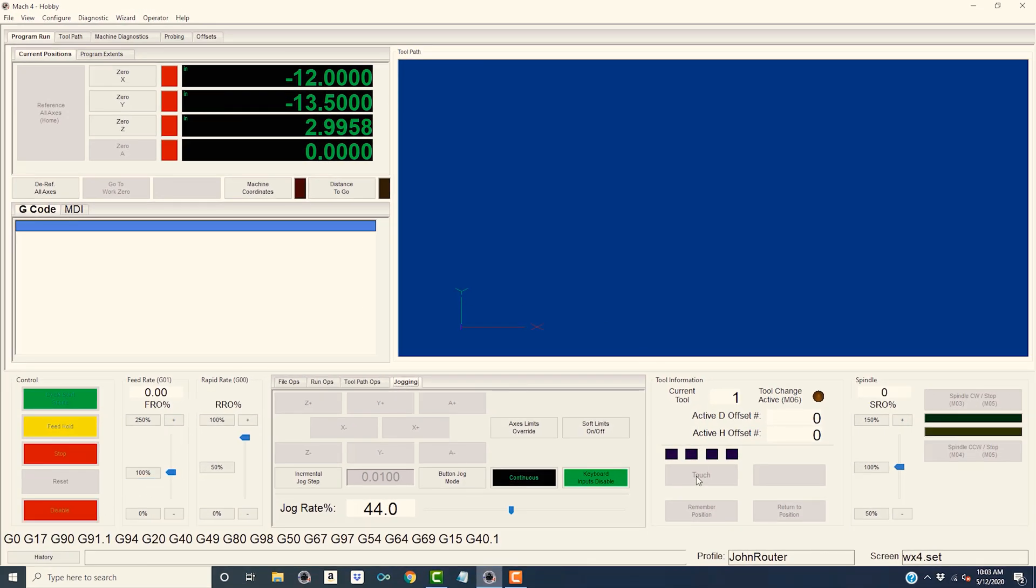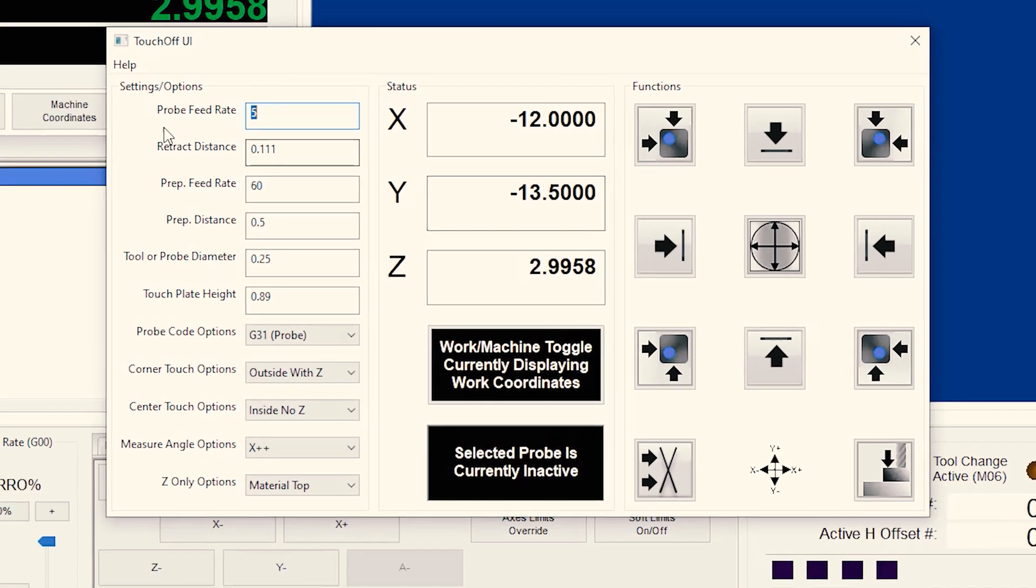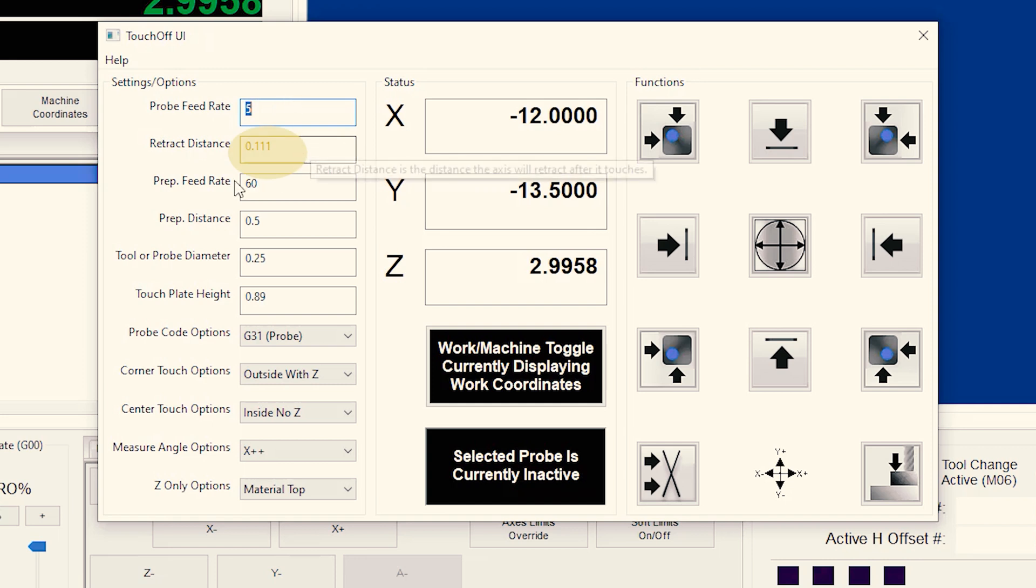Now we enable it. Go over to the touch menu. And this window comes up. I set the speed of the probe pretty slow, set the offset and the thickness of the probe itself. And that's going to give me a total of one inch.